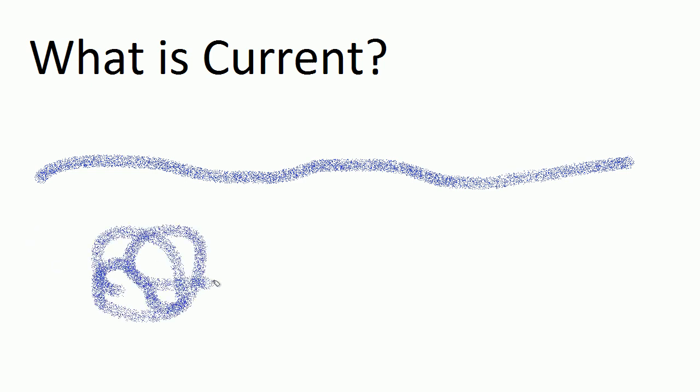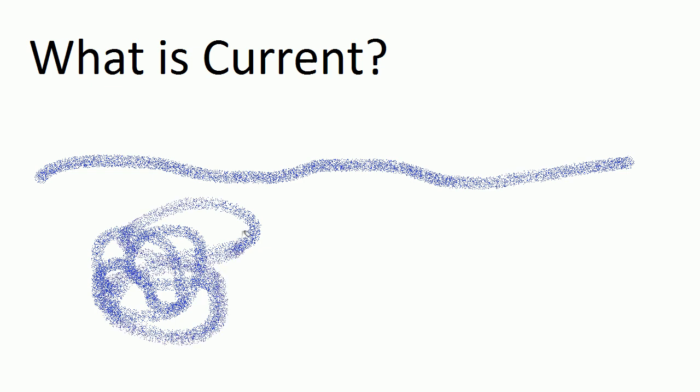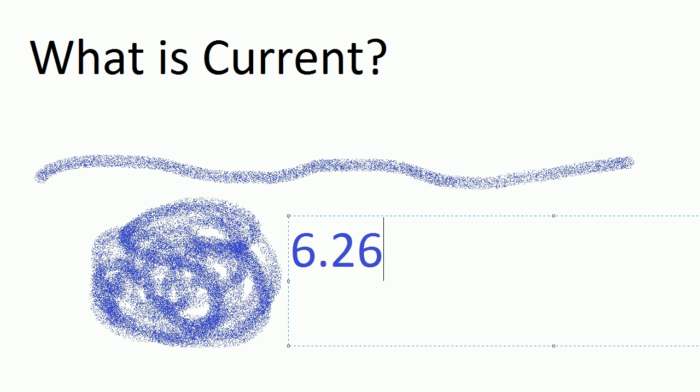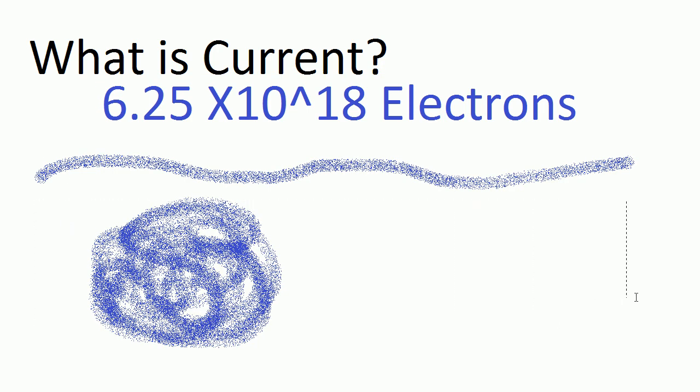And that amount of current is also referred to as one coulomb. I think I'm pronouncing that right. People usually just call them coulombs. One coulomb of electrons is 6.25 times 10 to the 18 electrons. That's a lot of electrons. Just spelling that out normally.